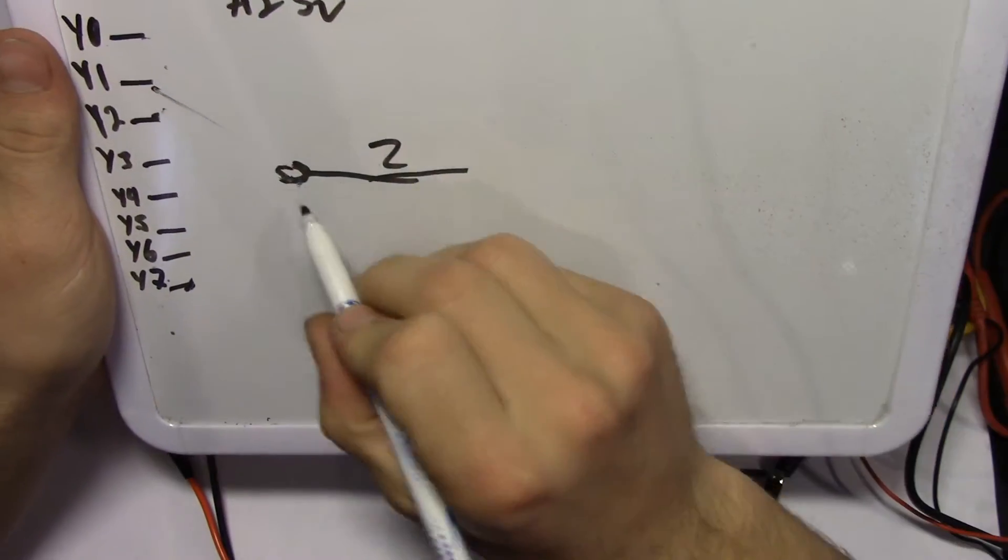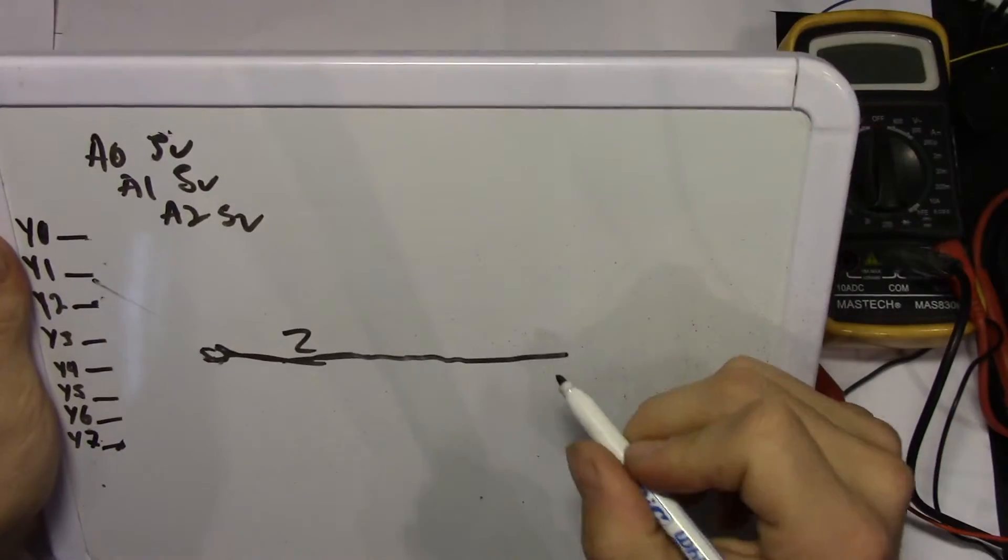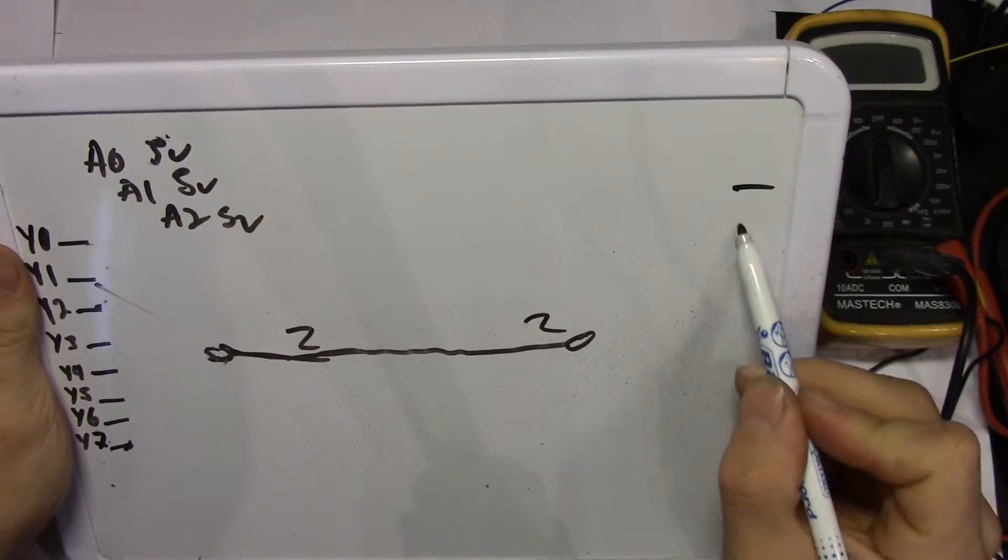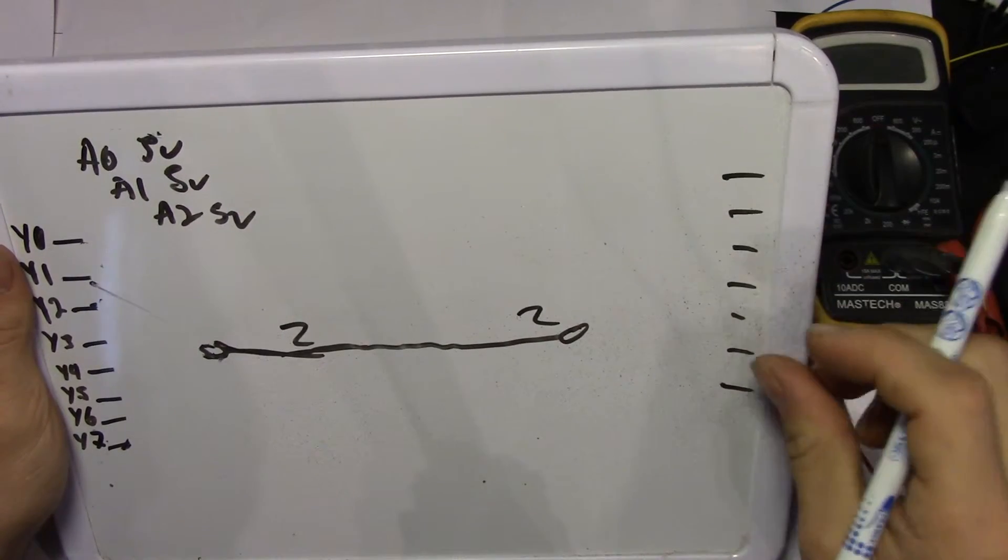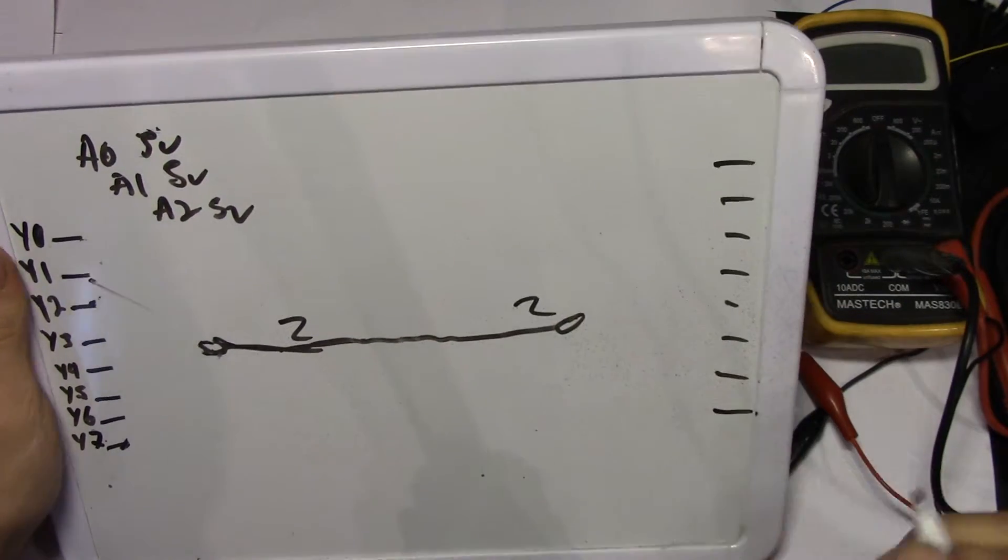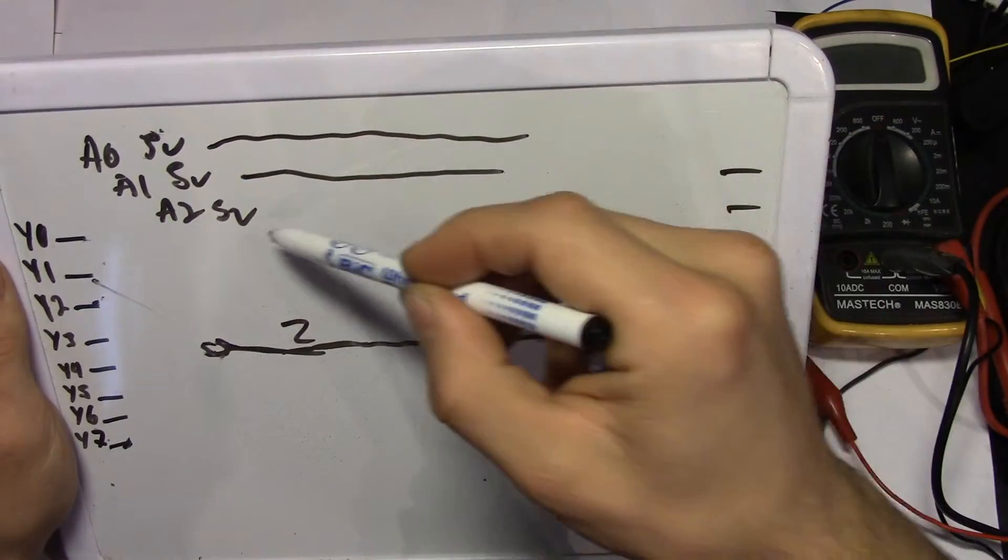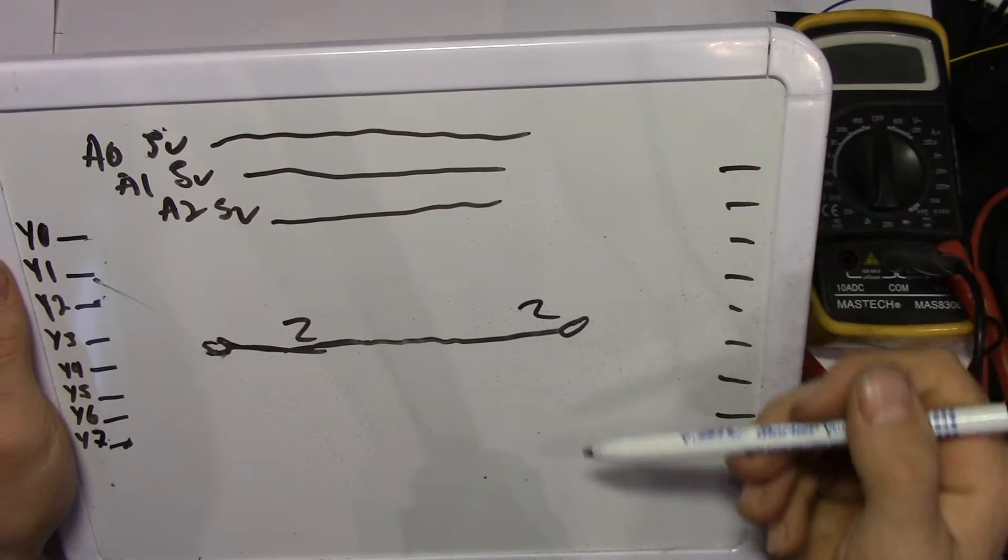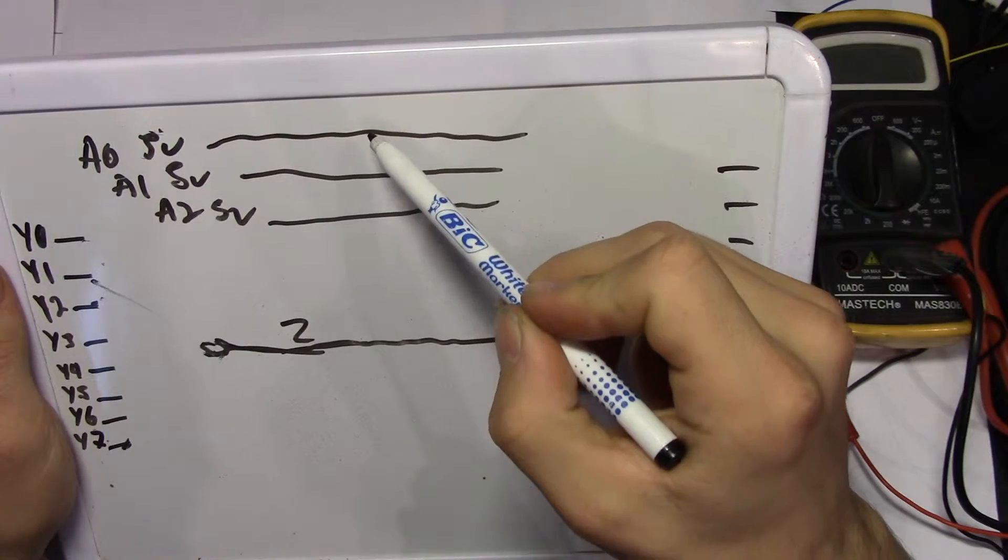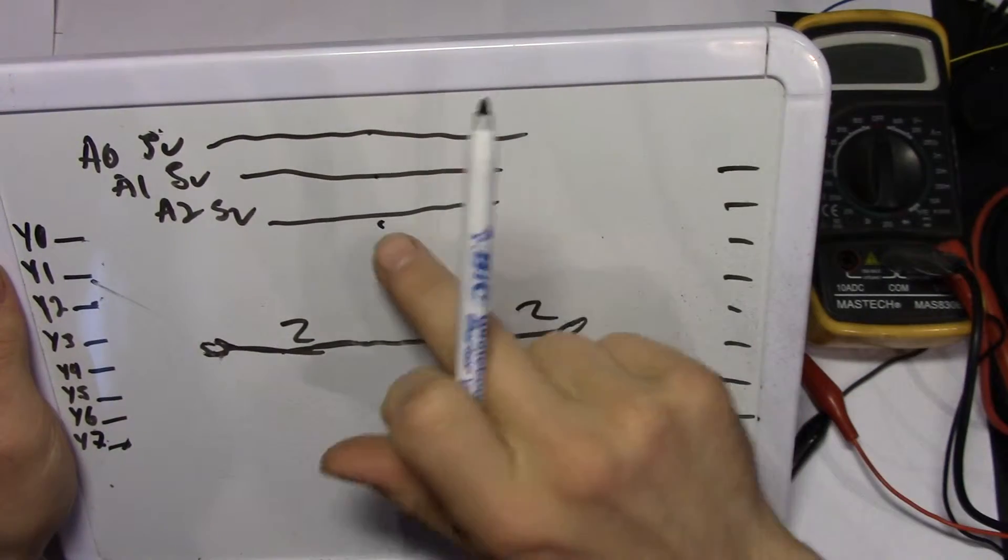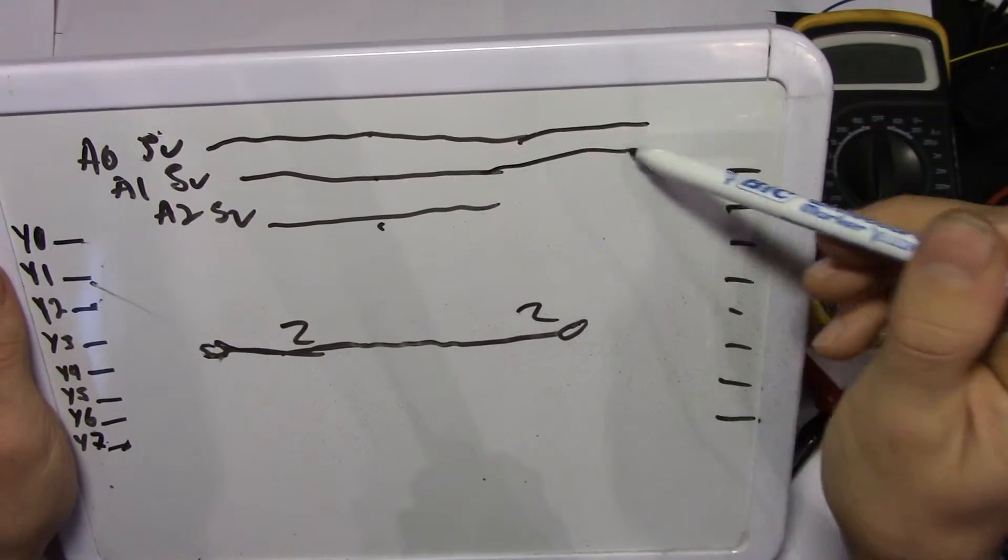But what we actually can do is we can pull this line a little bit longer here. We can put a set here. We can put seven outputs here. One, two, three, four, five, six, seven, sorry I meant eight. And we can pull these lines over here. We can have another 4051 chip here. So if all of these are controlled through the same switches, these wires will always be the same on both chips.